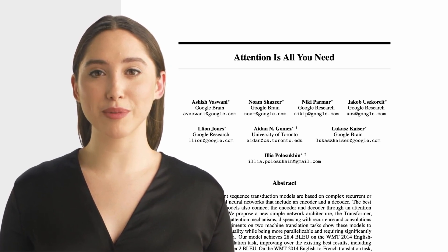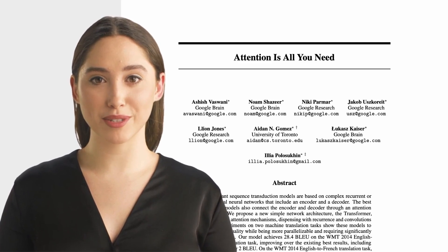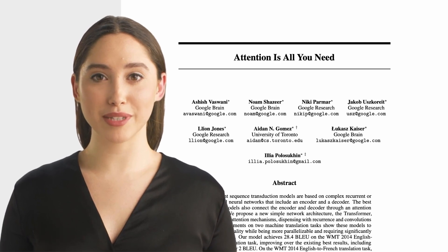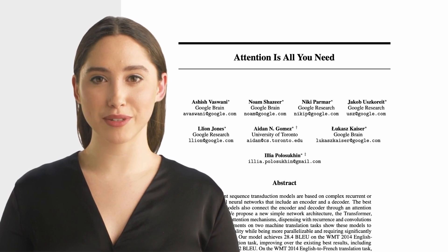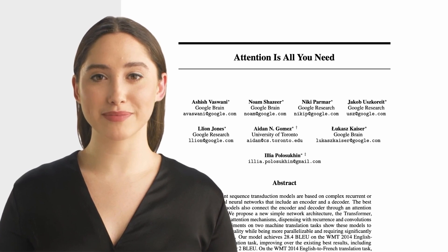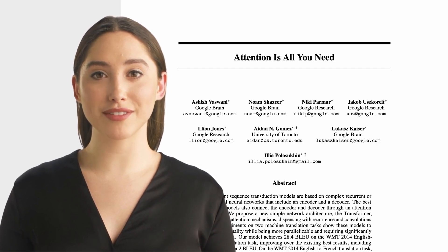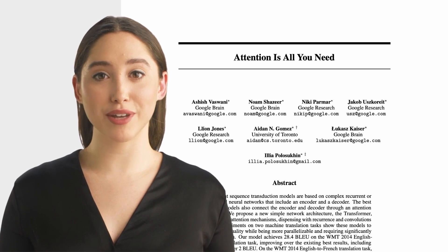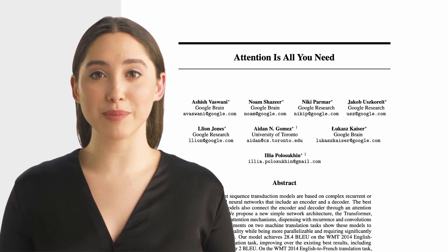Another key innovation of the transformer model is the use of self-attention. Self-attention allows the model to weigh the importance of different parts of the input when making predictions about a specific part of the input. This allows the model to understand the relationships between different parts of the input, which improves its ability to understand context. Finally, the transformer model's architecture is based on the encoder-decoder architecture, where the encoder reads the entire input and the decoder generates the output, allowing the model to generate output based on the entire input rather than word-by-word.